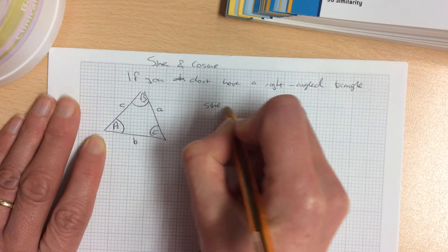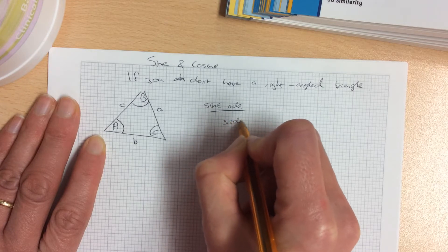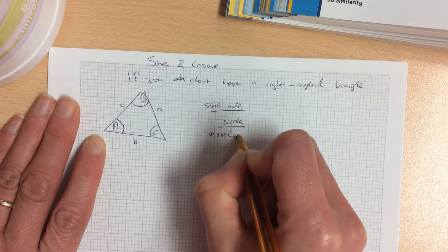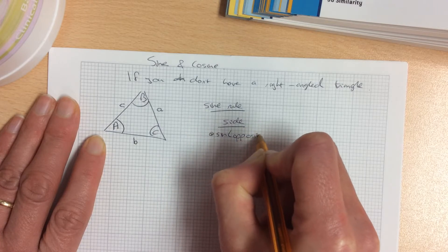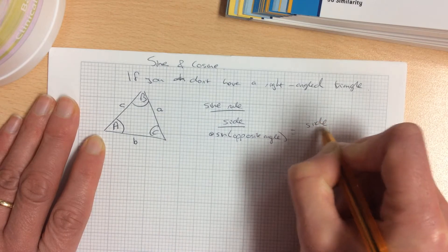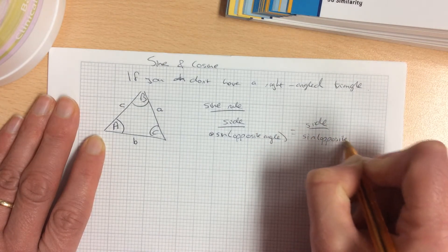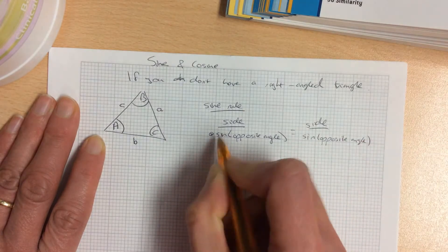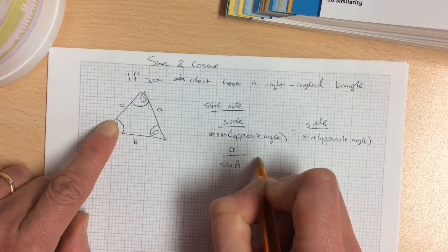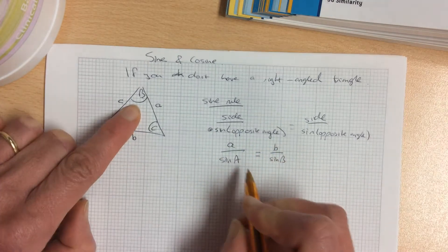The sine rule goes like this. It's side over sine the opposite angle equals another side over sine the opposite angle. So I could have side a over sine A equaling side b over sine B.